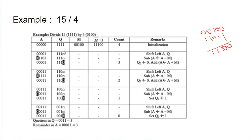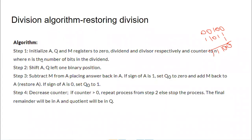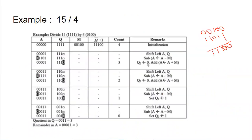This is the initialization step from the algorithm: A is set to zero, Q to the dividend, and M to the divisor. We also find the two's complement of the divisor. The count is 4, since there are four bits in the dividend (1, 2, 3, 4). We repeat the process until count becomes zero.